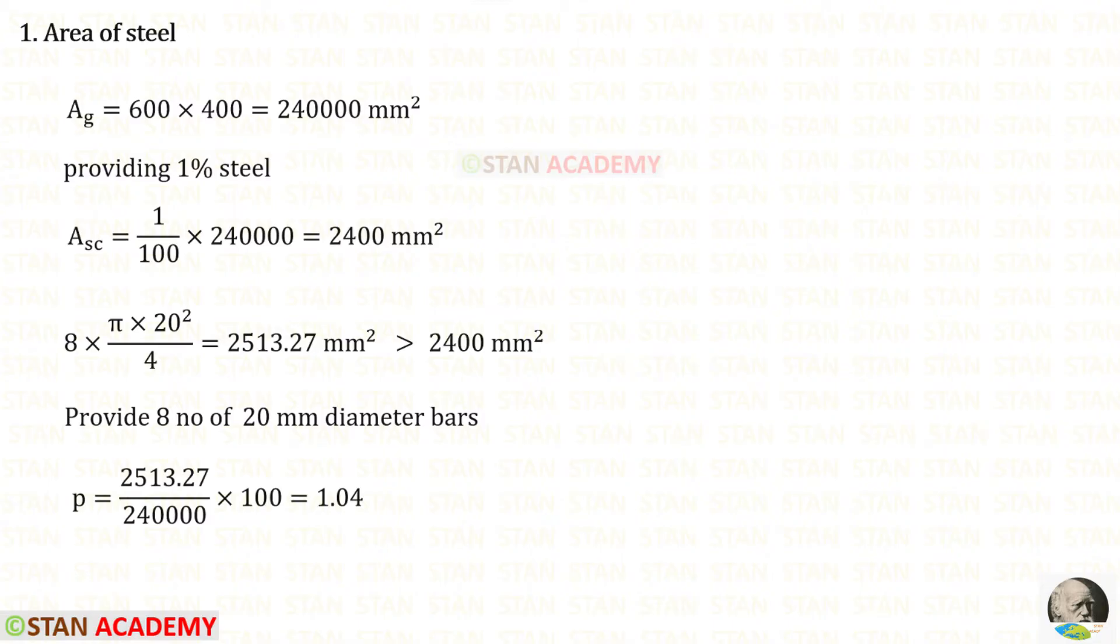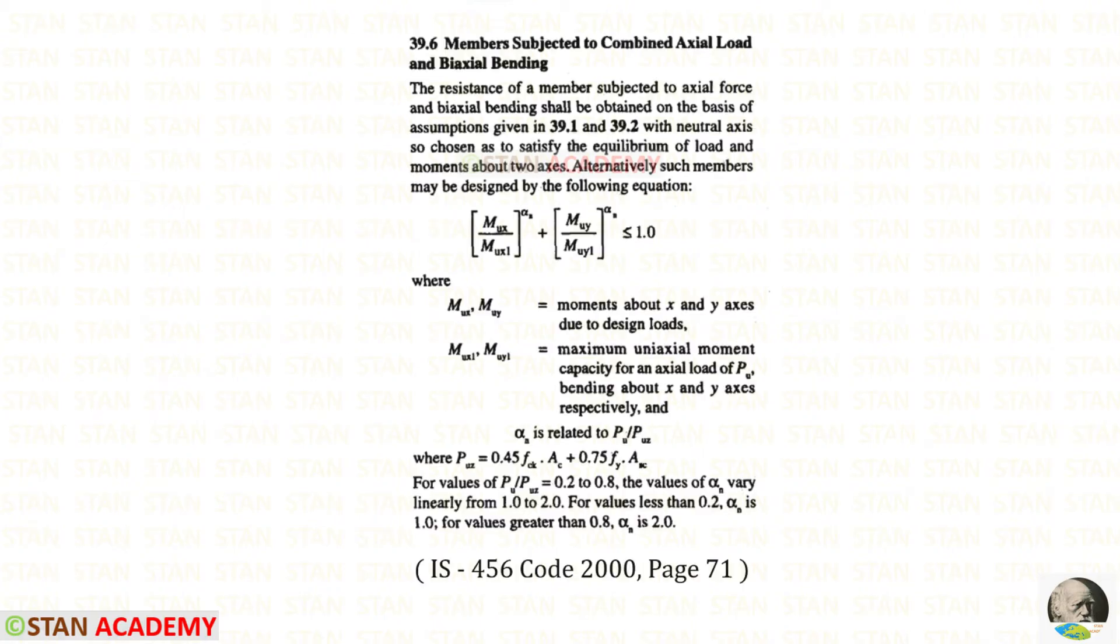Since the provided area is more than the required area, the percent p will change. Let us find that: the provided area upon the gross area into 100, we will get the correct percent which is 1.04. We have designed the longitudinal reinforcement.